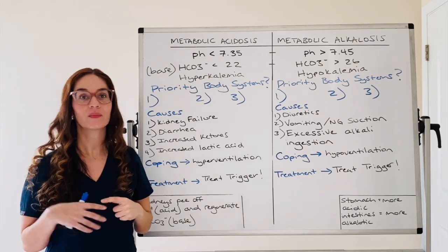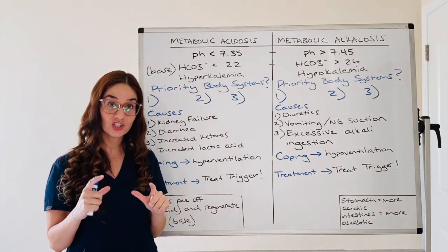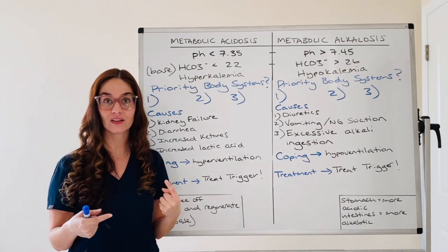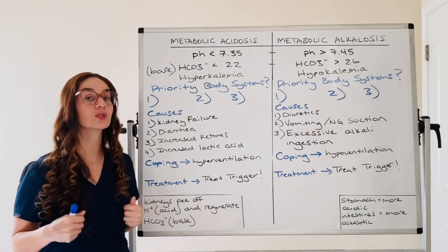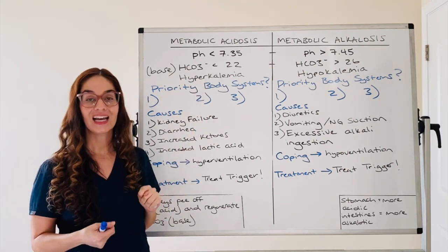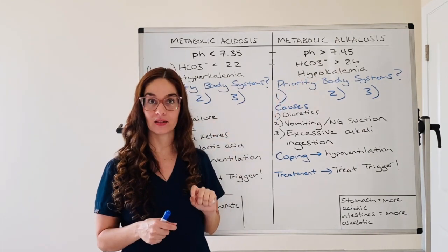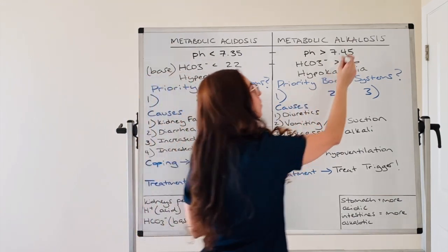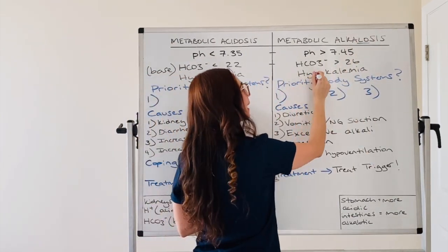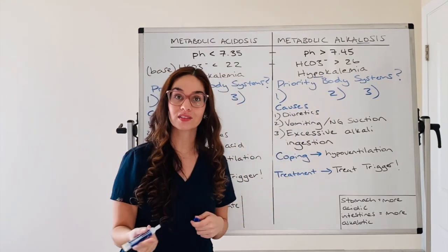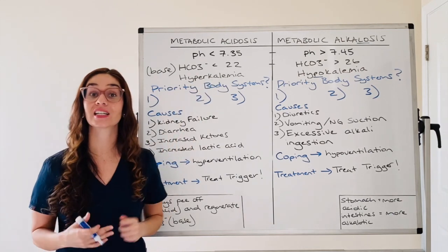In terms of potassium, this is something you might just need to memorize. In acidosis, you traditionally have hyperkalemia. In alkalosis, you traditionally have hypokalemia. How you're going to remember this is 'alka-low' — low has hypokalemia. So alkalosis, think low potassium. Acidosis, you traditionally have high potassium.